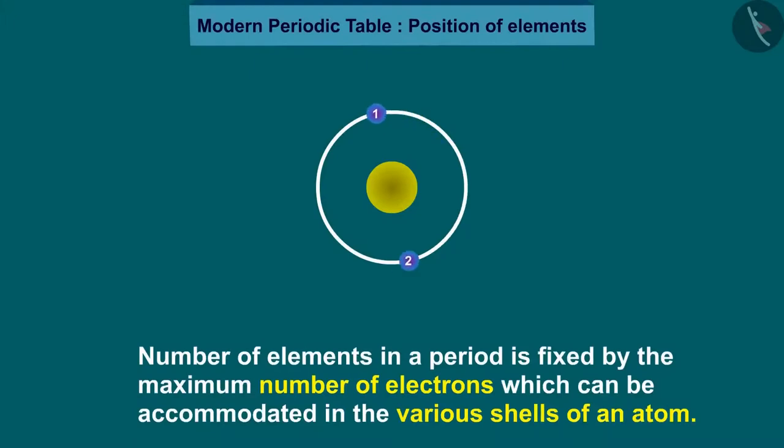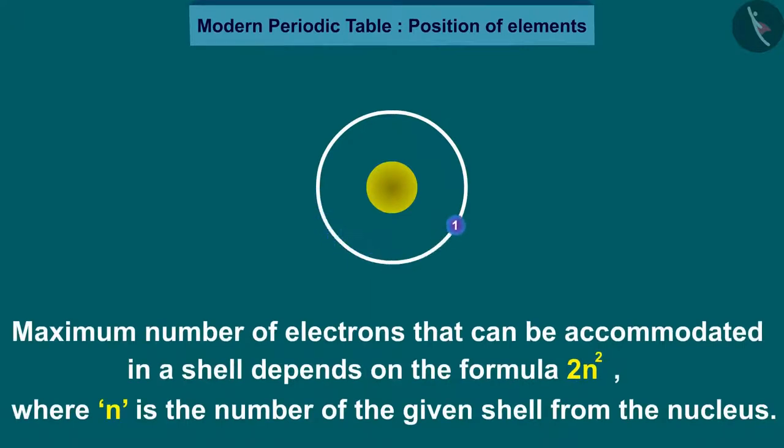The number of electrons in a period is fixed by the maximum number of electrons which can be accommodated in the various shells of an atom. The maximum number of electrons that can be accommodated in a shell depends on the formula 2n², where n is the number of the given shell from the nucleus.